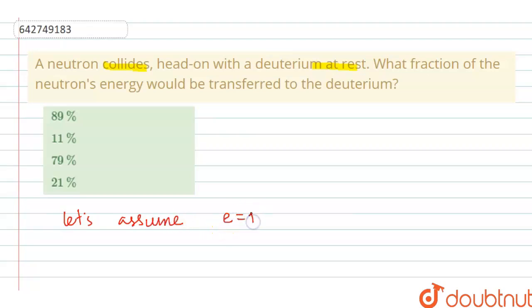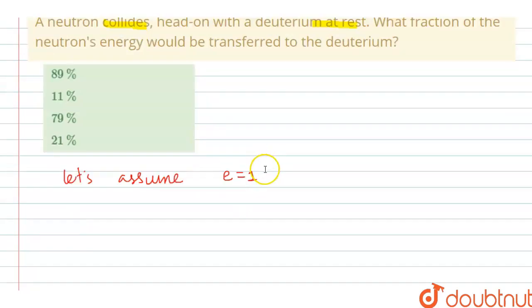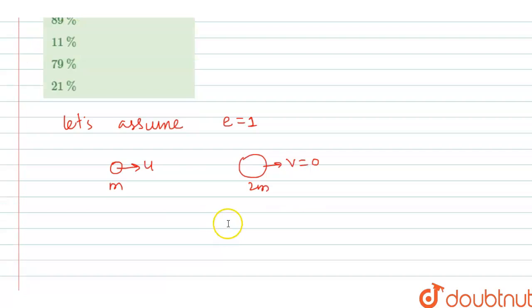e is equal to 1, right, elastic collision. So let's just draw the initial condition. A neutron, this is a neutron, its mass is m. And this is a deuteron, its mass is 2m. This is colliding. Let's just say initial velocity is u, and this is at rest, right, so v is equal to 0. This is before collision.